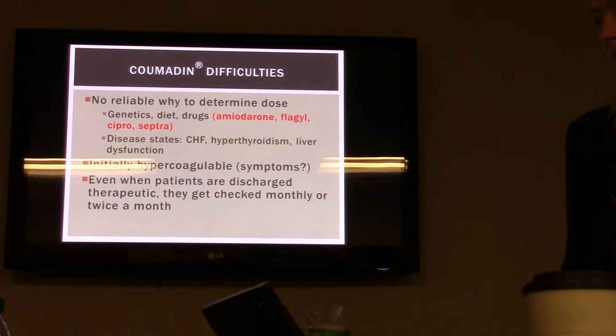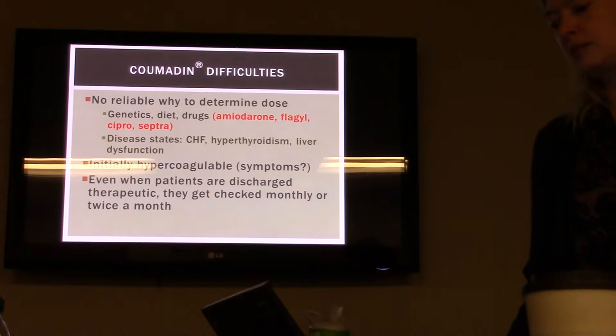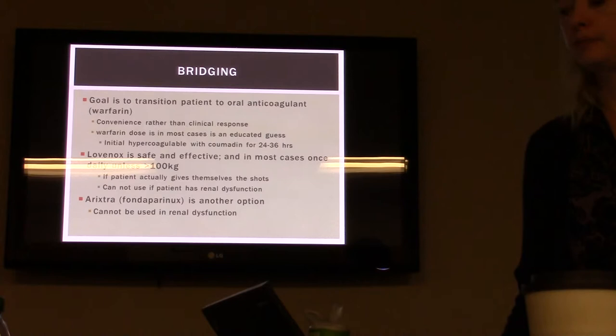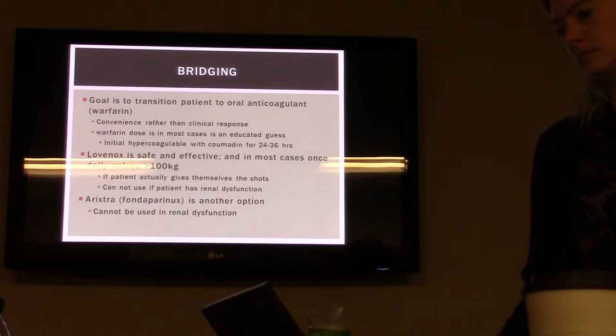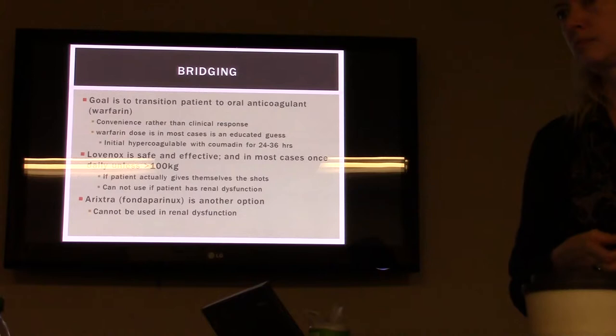Patients are initially at risk for hypercoagulability, and even when discharged and therapeutic, they have to get their INR checked monthly or twice a month. The INR goal for most AFib patients is 2 to 3. Unless they're high risk — such as patients with mechanical mitral valves — then it may be 2.5 to 3.5. Mechanical mitral valve replacement, between the left atrium and left ventricle, carries a higher INR goal. If a patient has atrial fibrillation plus an aortic valve, they also need a higher INR goal.